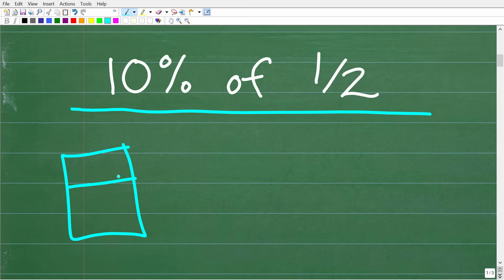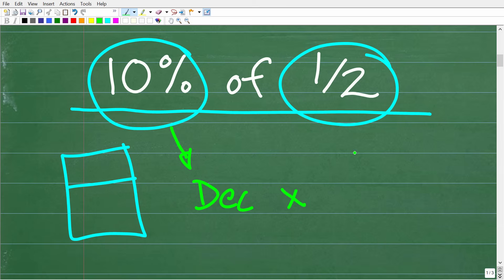All right, so if we had a calculator and we wanted to find 10% of one-half, what do we do? Well, the general procedure here is to change a percent into a decimal, and then we're going to multiply by this number right here, one-half. And then of course we would get our answer, and the correct answer here is 0.05.